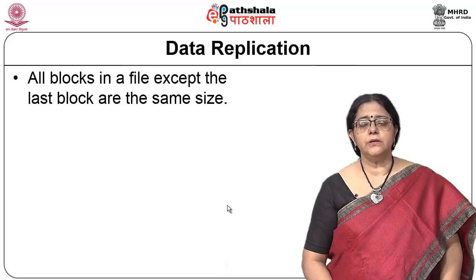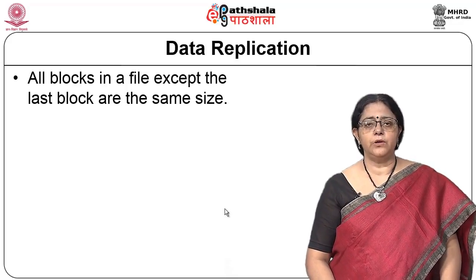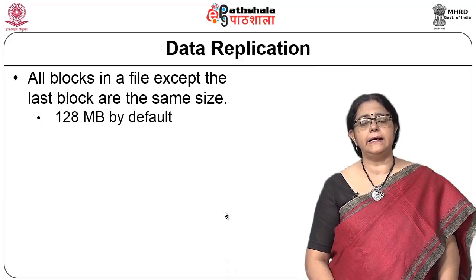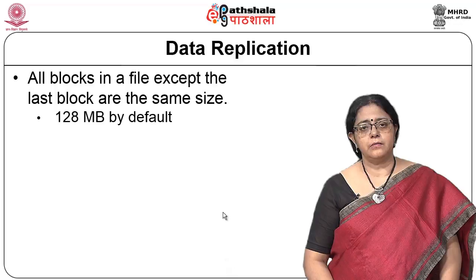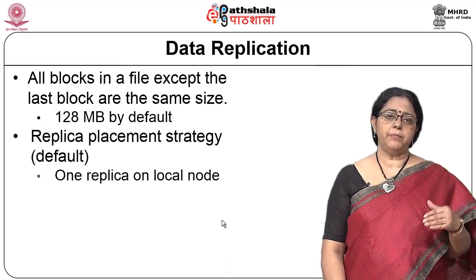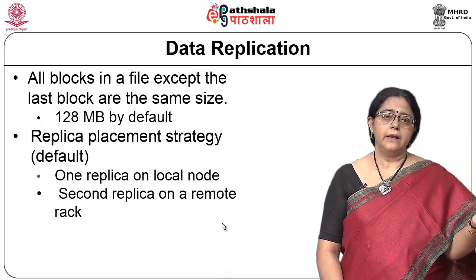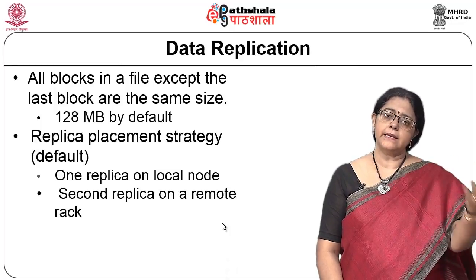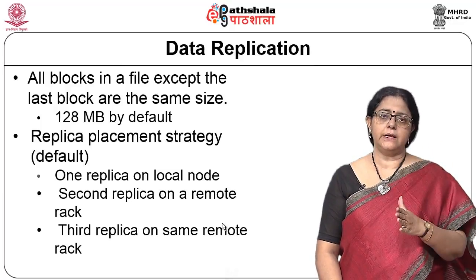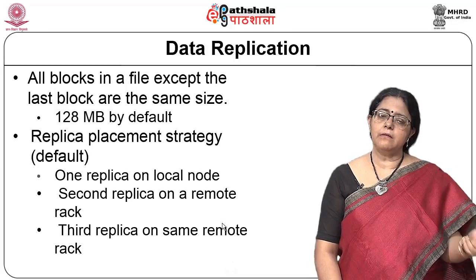The components of Hadoop are: the name node (the master), the data nodes (the workers), and the secondary name node. Replication is the major mechanism. All files are divided into equal-sized chunks — typically 128 MB, but configurable. The default replica placement strategy is: one replica on the local node where data is submitted, one replica in a different rack, and a third replica in that same remote rack but on a different node.